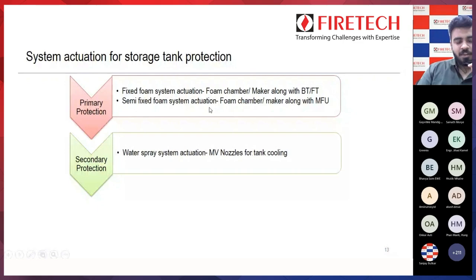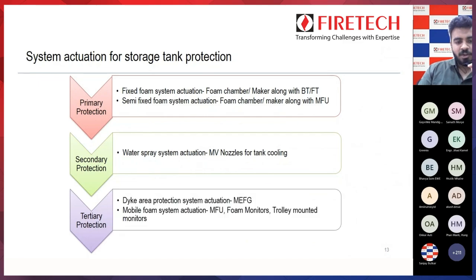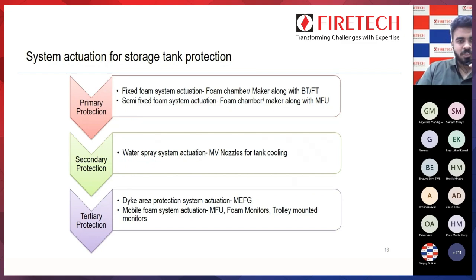For secondary protection, we have water spray system actuation using MV nozzles — it is only for tank cooling. For tertiary protection, we have dike area protection system actuation using MEFG, or mobile foam system actuation from mobile foam units which are portable, or foam monitors and trolley mounted monitors can be used. These are the three types of protection which occur one by one during a fire scenario.